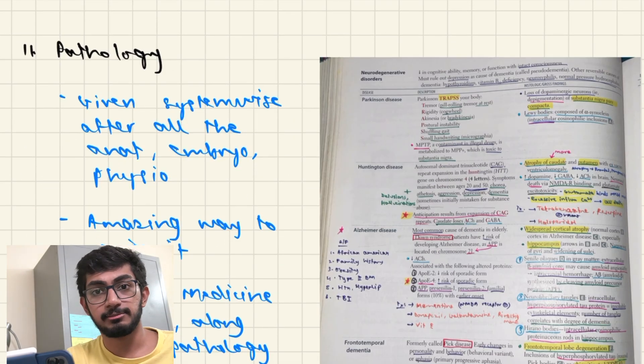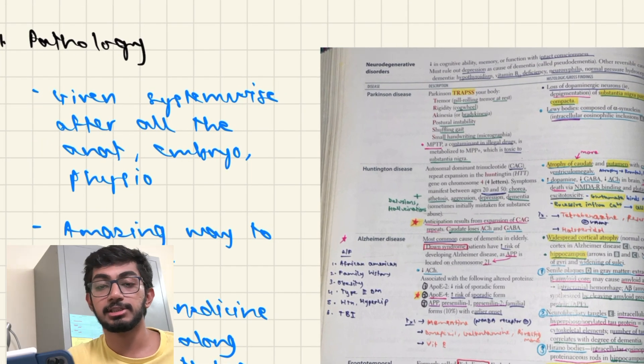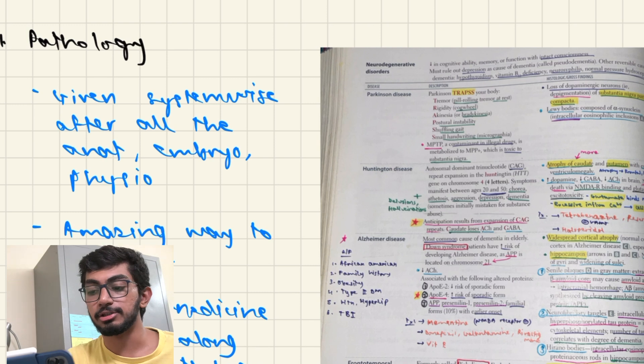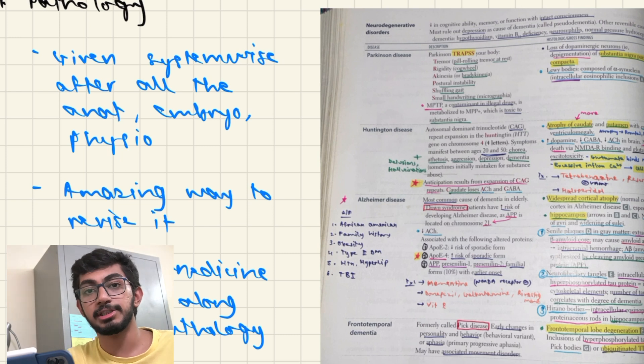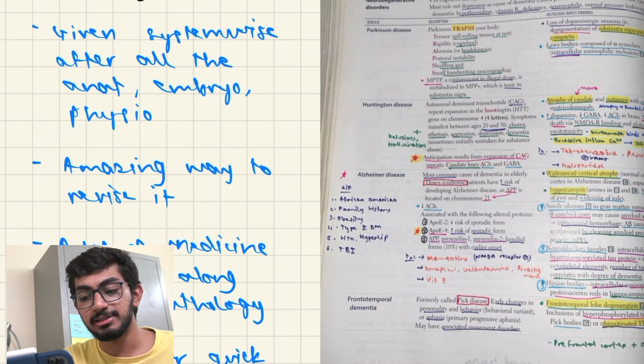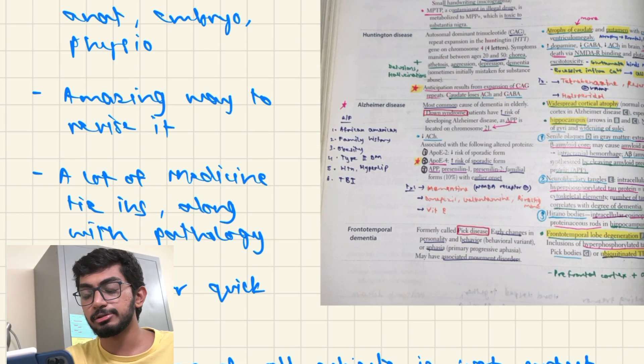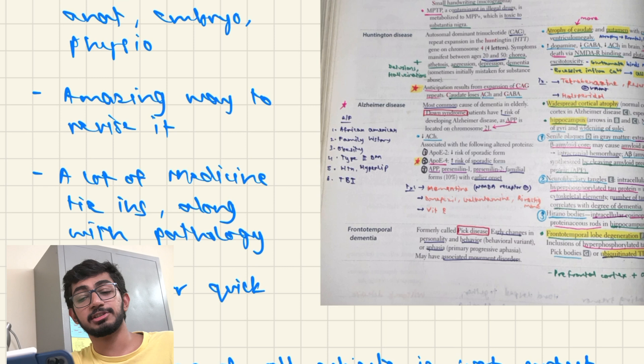Next is Pathology. Everything is given system-wise after each section. Like each section mentions the Anatomy, Embryology part first, then the Physiology part, and then the Pathology part. So if you read it in a system-wise manner, you'll understand the subject much better. It's an amazing way to revise Pathology. It makes everything fall in place and not just make you wonder which part is where and why do you have to study that. A lot of Medicine tie-ins are present and it will help you with the clinical questions. And it's also quick for revision. And it just integrates all the subjects that are there in first and second year very well.